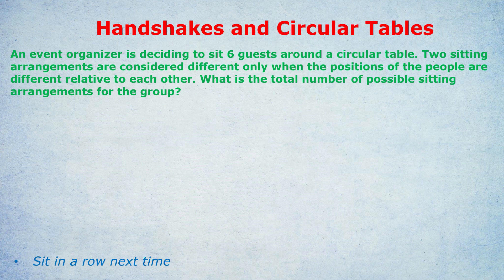This is the kind of wording they might use: An event organizer is deciding to sit six guests around a circular table. Two sitting arrangements are considered different only when the positions of the people are different relative to each other. What is the total number of possible sitting arrangements for the group? Now, some of you will put your hands up and go, but Philip, I thought that when you had, say, six people in a row, then the number of arrangements is six factorial. You could have six people in the first seat, then five options for the next seat, four options, three options, two options, one option. Six factorial. Why is it any different if there's a circular table? Why isn't the answer just six factorial?